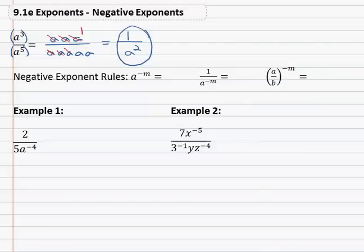However we could have simplified this a different way. We've seen a quotient rule which says that we can subtract the exponents off the same base in a fraction. If we subtract three minus five, we end up with a to the negative two power.